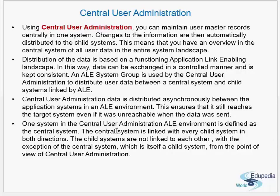The child systems are not connected to each other. You only transfer data from the central to the child system, and it can also work in reverse from child to central. Say I have chosen my development system — for example GB0 — as the CUA. From GB0's point of view, GB0 itself is both the central system and a child system. In GB0, user master records for all other systems in the landscape are created.